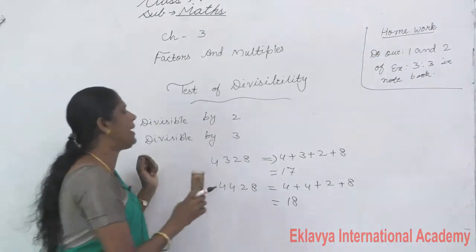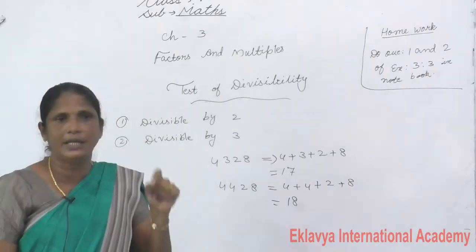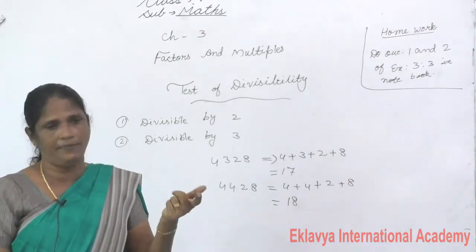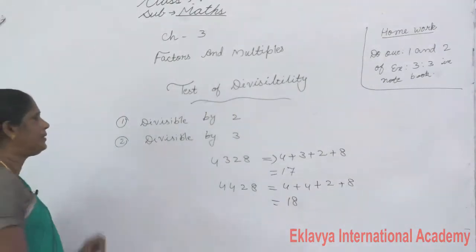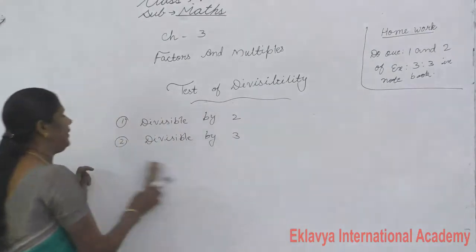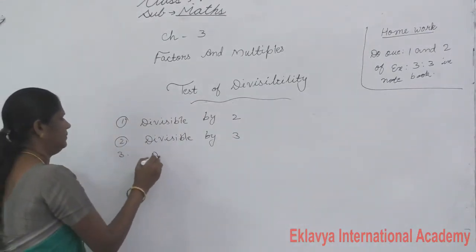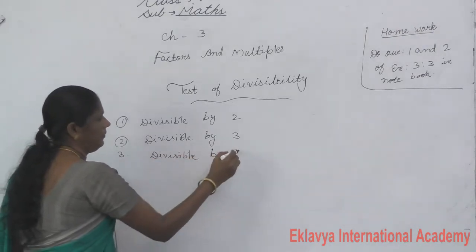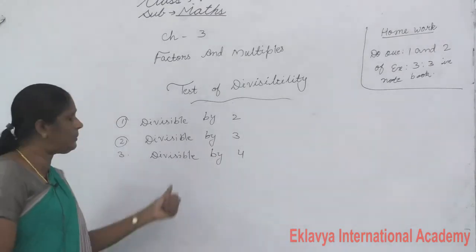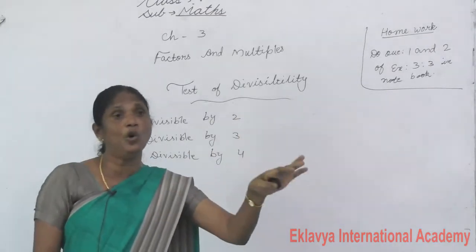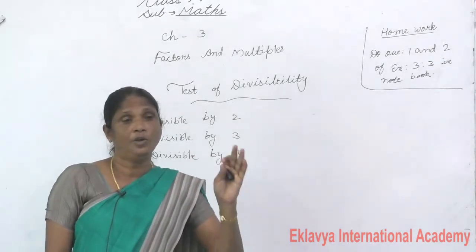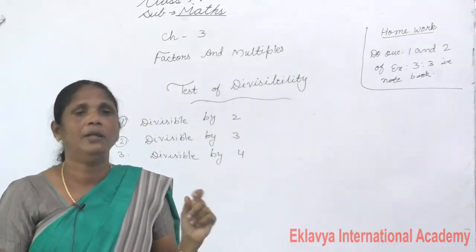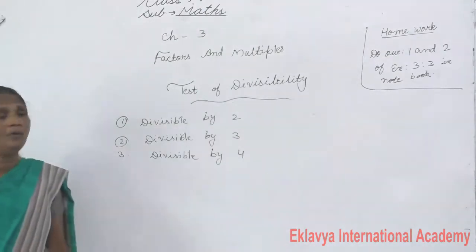What is the rule for divisibility by 3? The sum of the digits is a multiple of 3 — that number is divisible by 3. Next, divisibility by 4. In divisibility by 4, the last 2 digits — that is the 1's and 10's place — must be a multiple of 4.